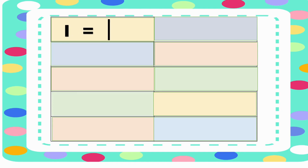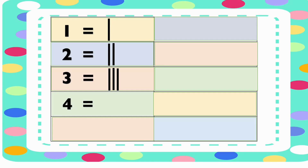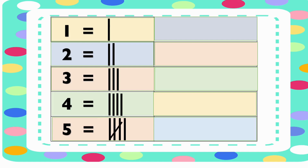Number one is represented by one straight line. Number two is represented by two straight lines. Number three is represented by three straight lines. Number four is represented by four straight lines. Number five is represented by four straight lines and one slant line. This makes one group — remember that tally marks are arranged in groups of five.